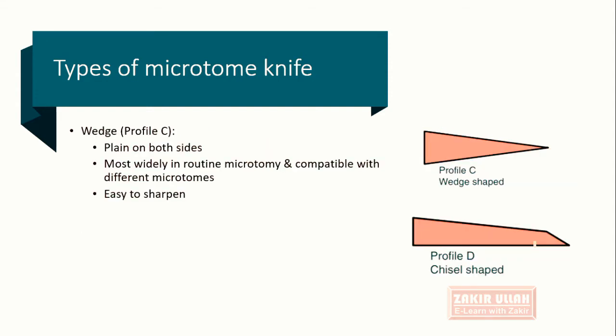The third type of microtome knife is Profile C, the wedge profile. In this type, the wedge shape is plain on both sides. It is the most commonly and widely used knife in the routine histopathology lab.